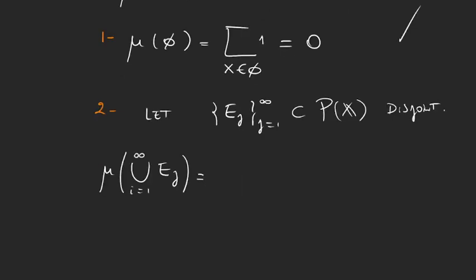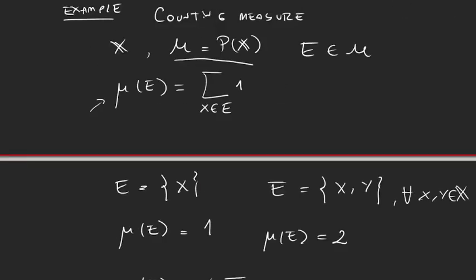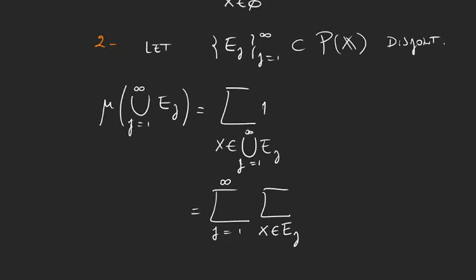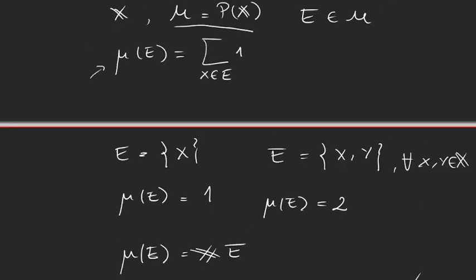Well, mu of the union is, we have to come here and say for every x in the union. So for the sum over all the elements x in the union from j equals 1 to infinity of E sub j of 1. But this sum is the same as saying the sum from j equals 1 to infinity, because of the union, of the sum over all the elements x in each of the E sub j's of 1. But now when we look at this particular sum, we have the sum over all the elements in some set E sub j of 1. And that is the definition of mu just by saying E sub j instead of E.